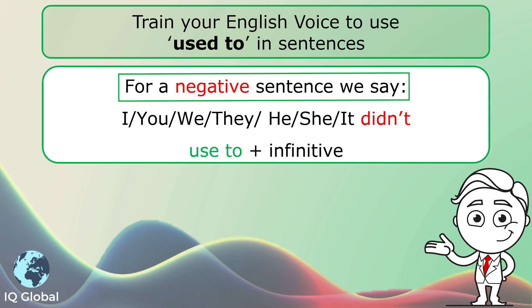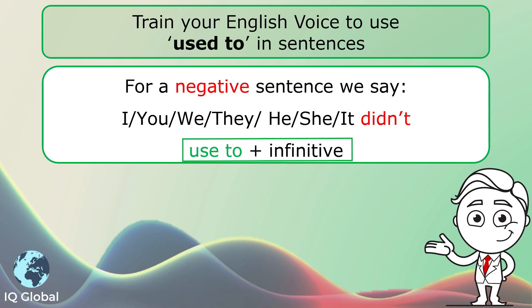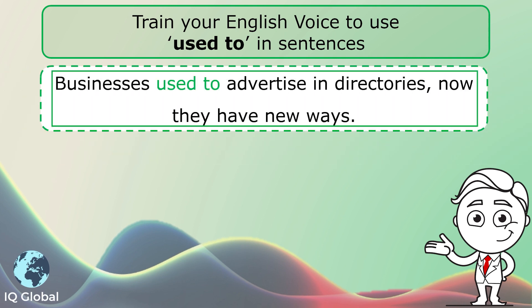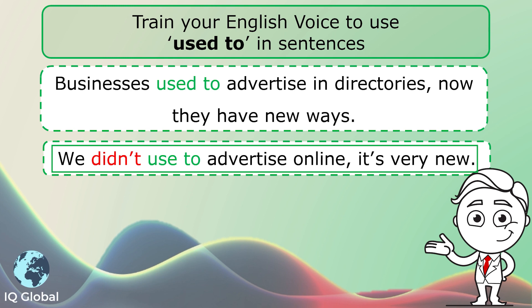For a negative sentence, we say I, you, we, they, he, she or it — didn't used to plus infinitive. For example: 'Businesses used to advertise in directories. Now they have new ways.' This sentence is in the positive. 'We didn't used to advertise online — it's very new.' This sentence is in the negative.